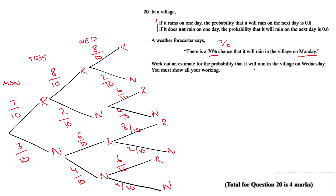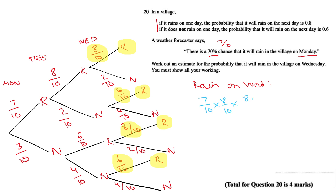The question asks for the probability it will rain on Wednesday, so we need to work out the rain on Wednesday. We're interested in these four probabilities. Going from rain, rain, rain — that's 7 tenths multiplied by 8 tenths multiplied by 8 tenths, which gives 56 over 125.